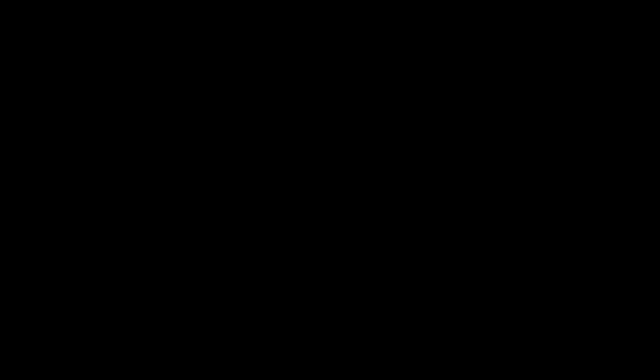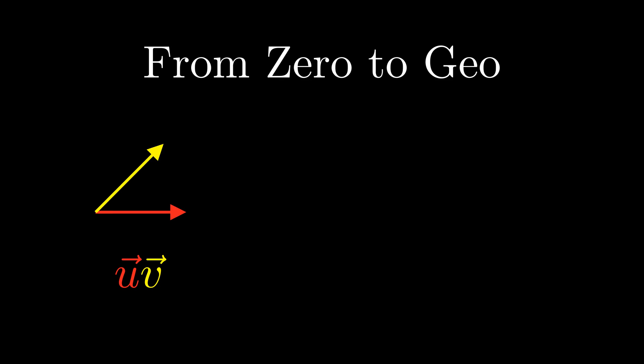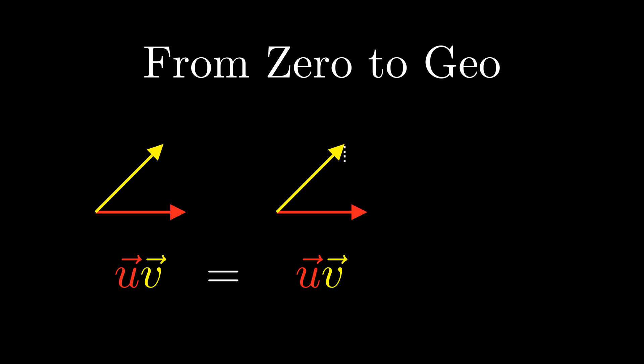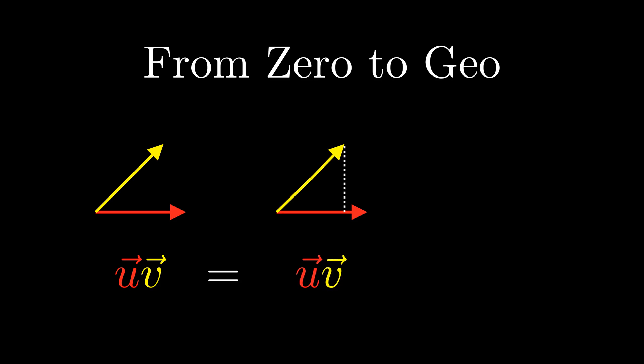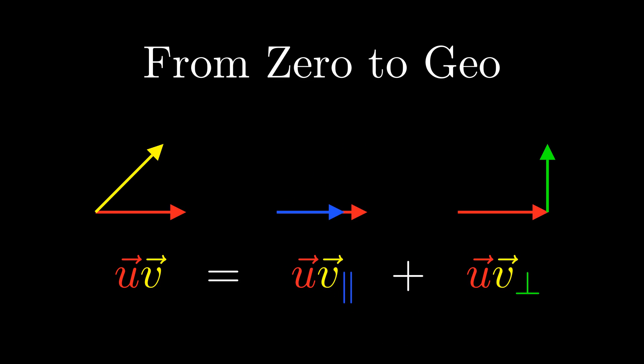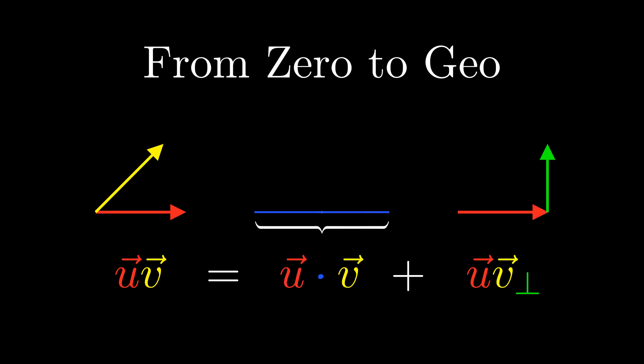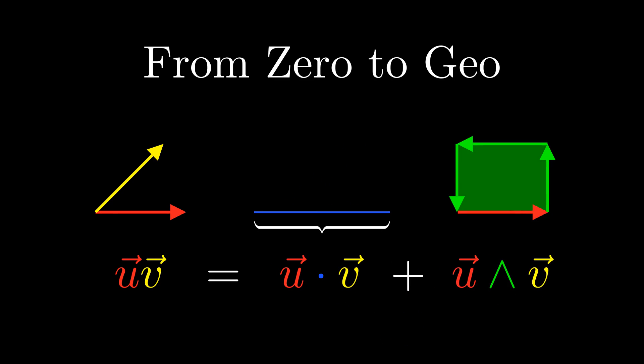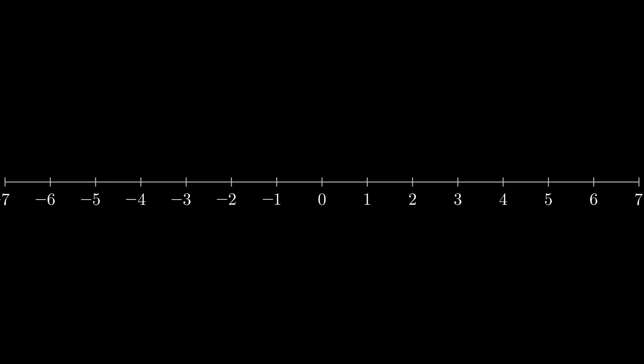This video is a part of From Zero to Geo, a series where we formulate geometric algebra — an incredibly powerful branch of mathematics — from the ground up. So how can we add vectors? Let's look at adding numbers to see if we can get some clue.